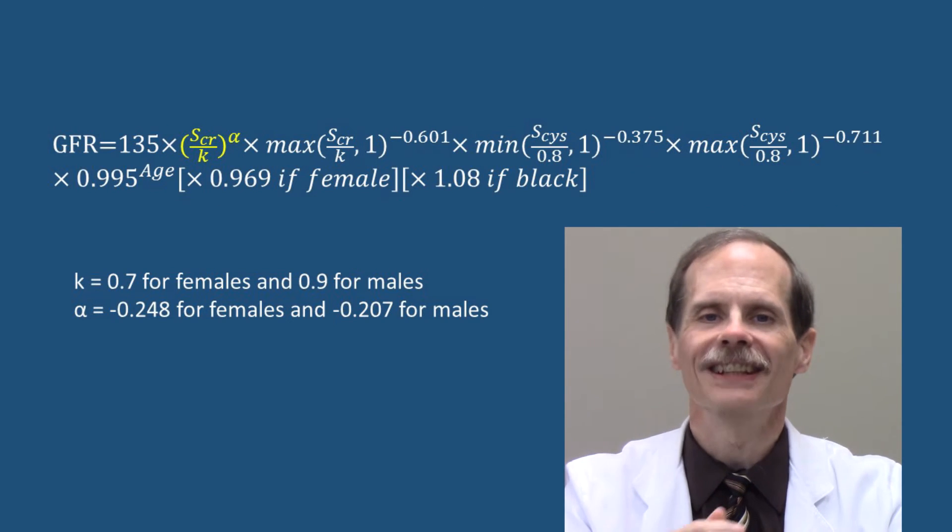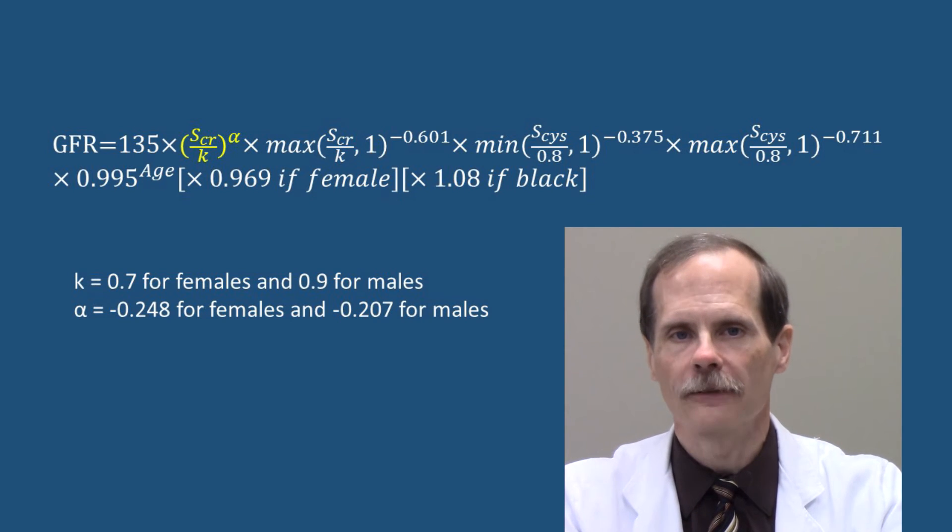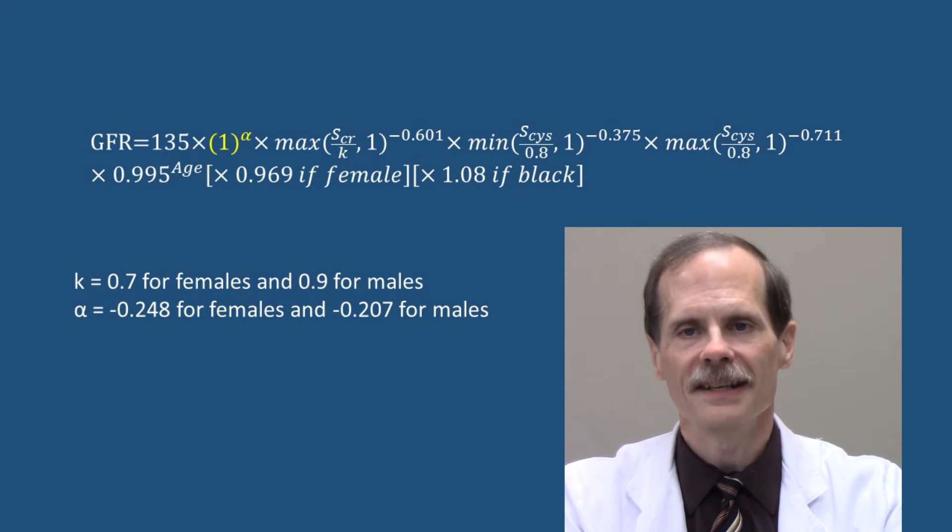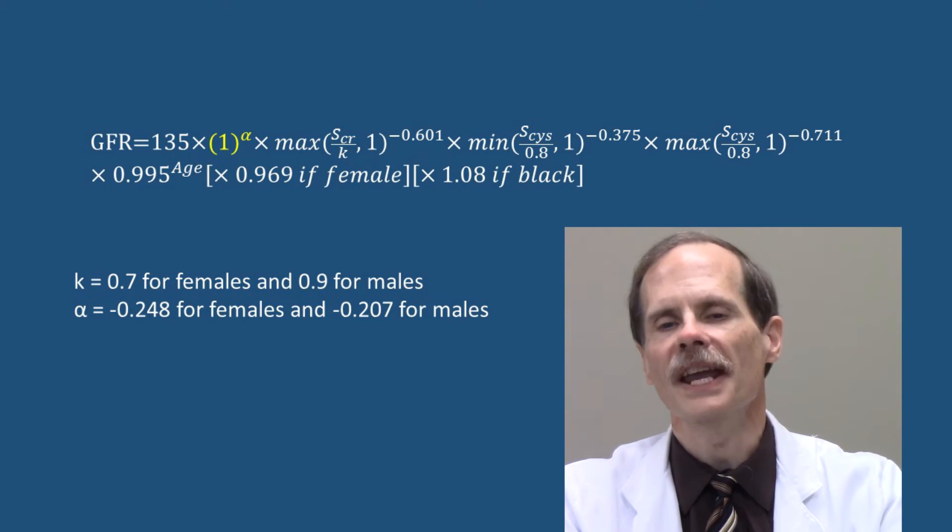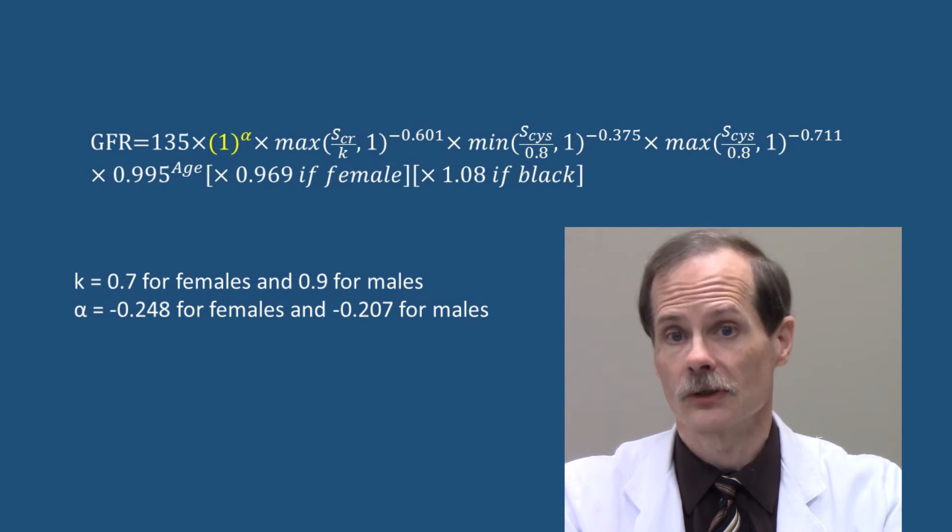If the ratio is less than one, the ratio is raised to the power of alpha, which is negative 0.248 for females and negative 0.207 for males. If one is less than the ratio of serum creatinine to kappa, one is raised to the power of alpha. And remember, one raised to any value is going to equal one.